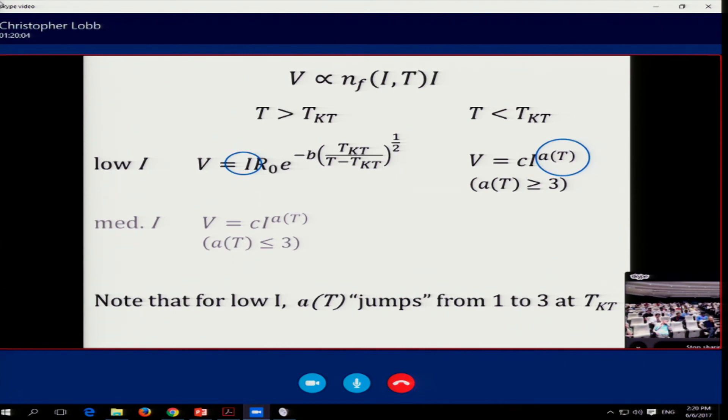And it's hidden in all these things here. At low enough I, V should be proportional to I below TKT, and it should be a power law where the power is greater than three. That's what we need to look for. We need to turn our current down far enough to where we either see this or we run out of resolution and don't see it. There is a jump in A of T from one to three. And this is a consequence of the universal jump in the superfluid density predicted by theory. A of T depends on the superfluid density, the effective renormalized superfluid density in two dimensions.